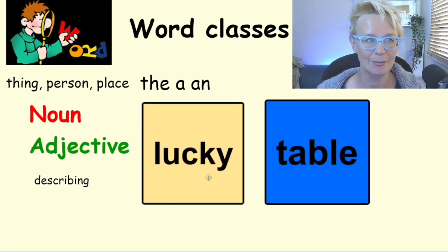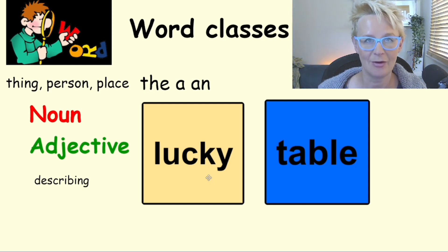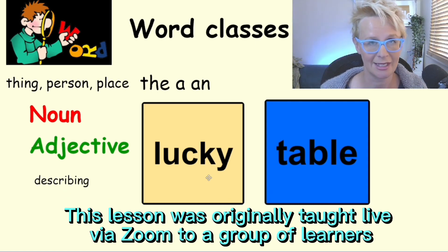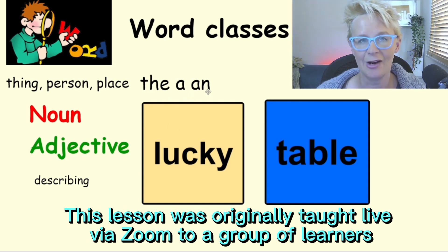First we're going to explore what a noun is and what an adjective is. A noun, if you don't already know, is the name of a person, a place, or a thing. It's quite easy to decipher — if it's a proper noun, it usually has a capital letter, and if it's a common noun, it usually has 'a', 'the', or 'an' at the front.